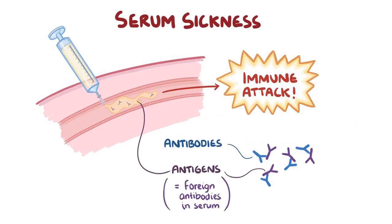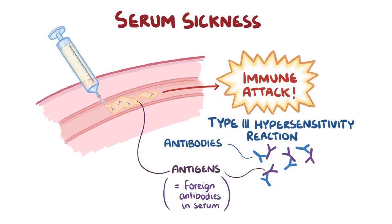A clinical diagnosis of serum sickness was made here. Serum sickness is a type 3 hypersensitivity reaction due to formation of antigen-antibody or immune complexes. The condition classically occurs after the therapeutic administration of non-human proteins and manifests as a triad of fever, rash, and arthralgia, as seen in this case.